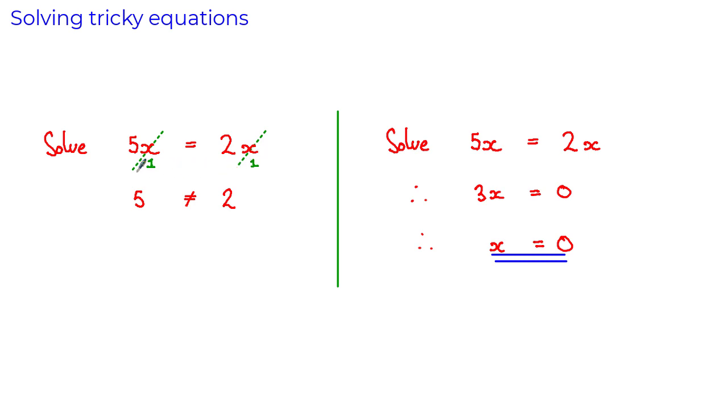As we saw here when we divided through by x we got that 5 is equal to 2 which we of course know is not true. In this tutorial we're going to have a look at a couple more examples where you cannot divide through by equal terms or expressions on either side of equations and you have to manipulate the equation in a different way. So let's have a look at the next example.